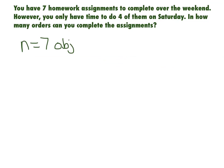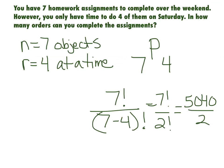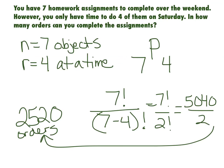But we have 7 homework assignments, so N is 7. And they are taken 4 at a time, so that's your R. R equals 4. So we are doing 7P4. And remember, NPR is N factorial over N minus R factorial. So 7 factorial over 7 minus 4 factorial. So your final answer is 2,520 different orders that you could do your homework on Saturday.